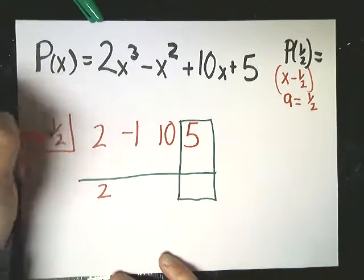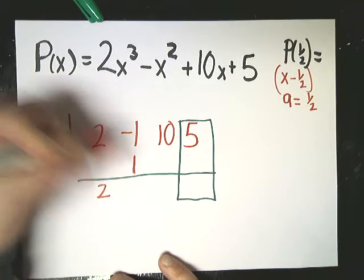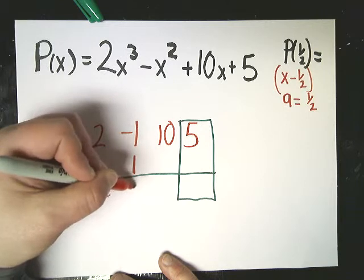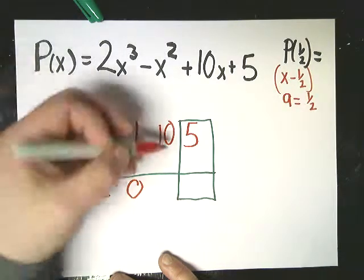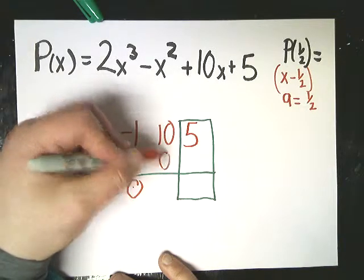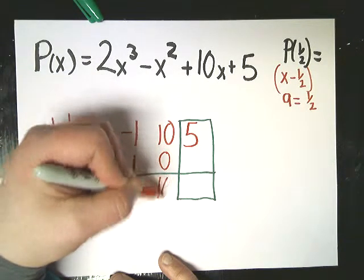Bring down your two. Two times one half is, of course, positive one. This one gives me zero. So one half times zero is zero. Ten plus zero is ten.